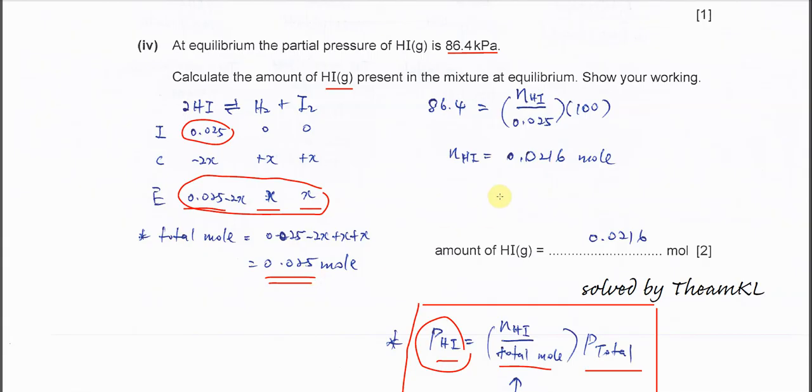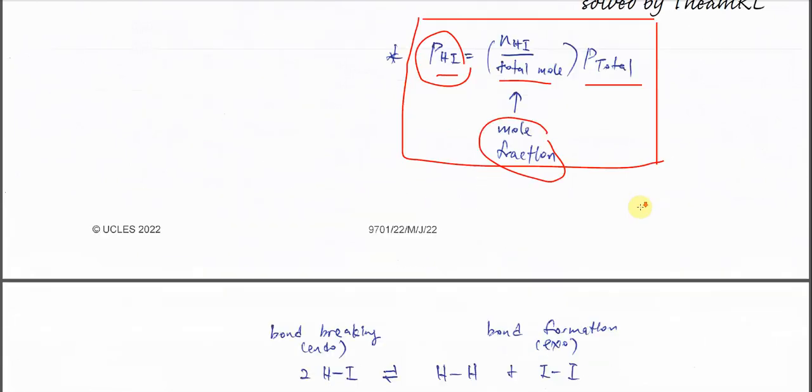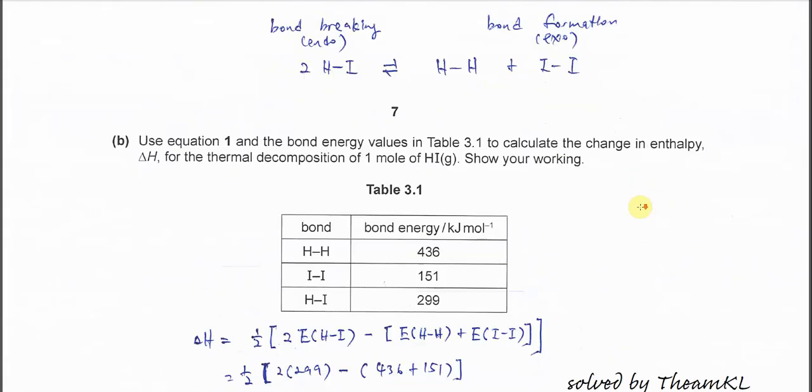Then use the partial pressures that are given. The HI partial pressure, which is 86.4, equals the mole of HI (this is what we want to calculate) over total mole times total pressure. Rearrange - the mole of HI is 0.0216.